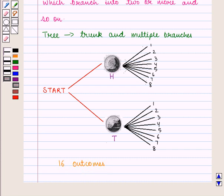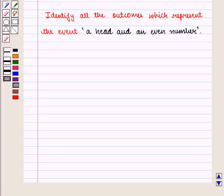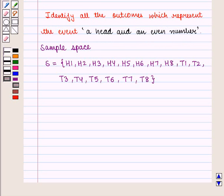So with the help of any of the above representations, we can identify all the possible outcomes of the event. Let us take an example. If we want to identify all the outcomes which represent the event, a head and an even number, from the sample space we can find the favorable outcomes for the given event.